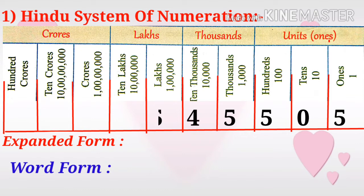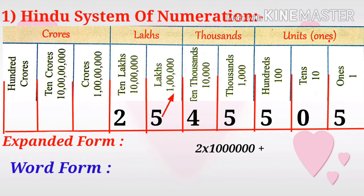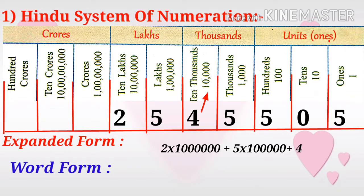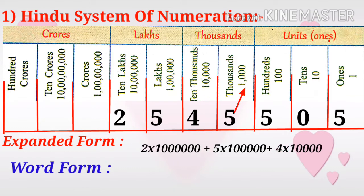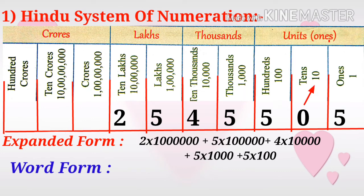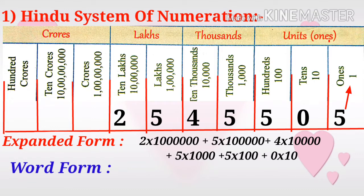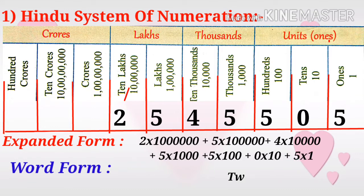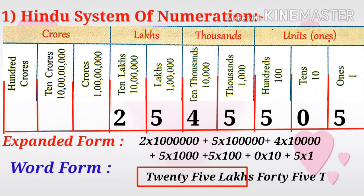Take another number. Writing the given number from right to left: 2 is in the ten lakhs place, so 2 × 10 lakhs. 5 is in one lakh place, so 5 × 1 lakh. 4 is in ten thousands, so 4 × 10,000. 5 is in one thousand, so 5 × 1,000. 5 is in hundreds, so 5 × 100. 0 is in tens, so 0 × 10. And 5 is in ones, so 5 × 1.